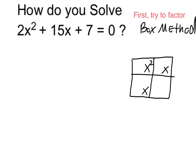Specifically for this example, 2x squared is going to go here, and my constant term 7 is going to go here.